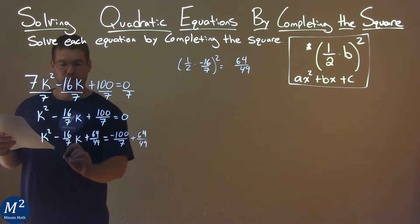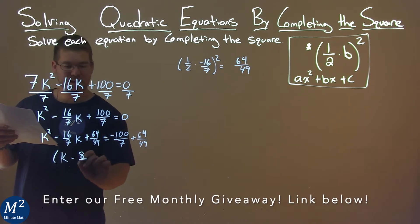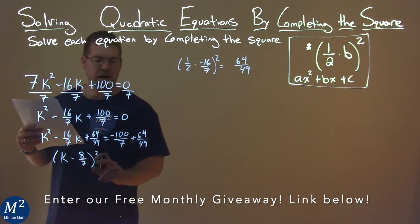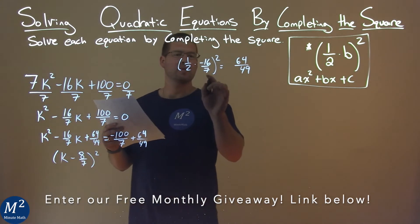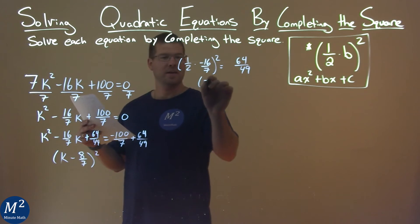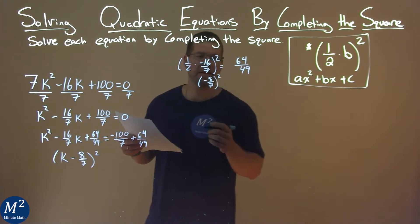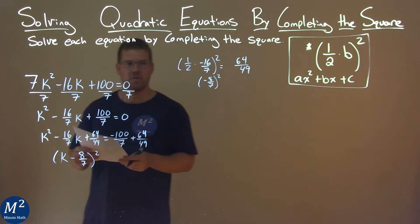Now, the left-hand side is a perfect square. That is k minus 8 sevenths squared, and that 8 sevenths is what 1 half times negative 16 sevenths is, that negative 8 sevenths here squared, just so you can see that, and then that gets us to 64 over 49.